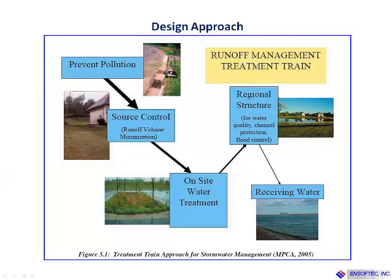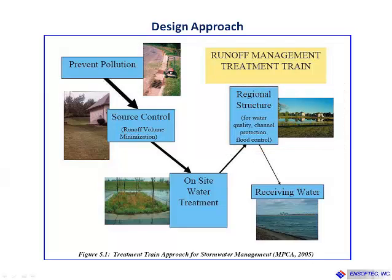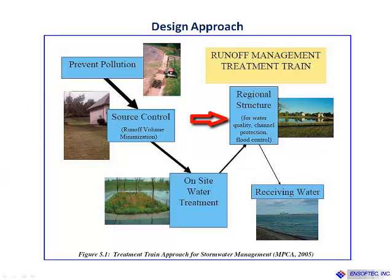This will substantially improve the quality of the channel or stream. Unlike in the past, when we used to treat stormwater for quality and quantity control near the outfall just before the runoff left the project or right-of-way, the new approach is to start controlling runoff right from the source. The runoff management treatment train approach consists of runoff volume minimization at source, on-site water treatment, and providing structures for water quality, channel protection, and flood control before it gets to the receiving channel.